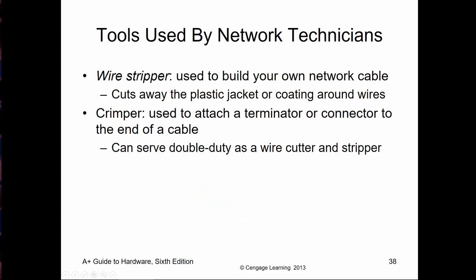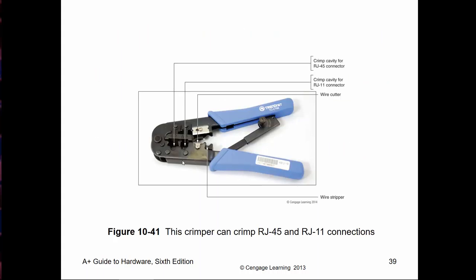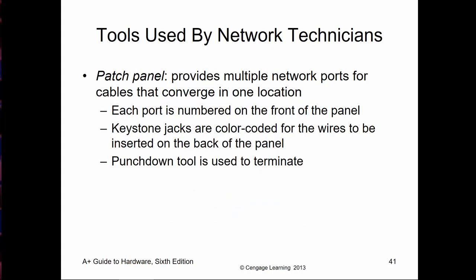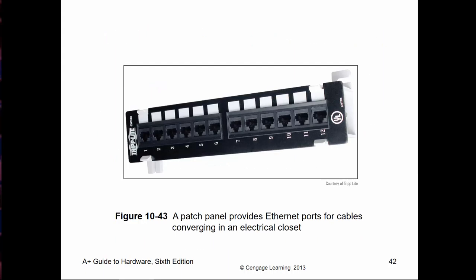If we're making cable, you'll need a wire stripper and a crimper. A crimper is what we use to terminate the cable. Here we have an RJ11 and an RJ45 port — you put the tip in with the cable and crimp it down. We also have a punch down tool, which is for terminating cables on a punch down block or patch panel. A patch panel is where we're actually connecting the cables to on the other side.